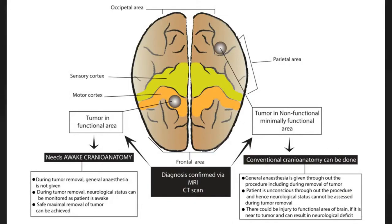This picture explains where awake craniotomy is useful. On the left side, the tumor is not on a functional area of the brain, so removal of this tumor does not cause serious neurological deficits and can be removed with conventional craniotomy. On the other hand, the tumor on the right is on the motor cortex, and removal of this tumor can cause weakness of limbs.